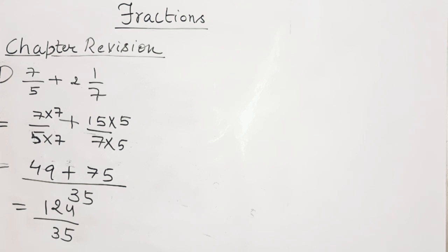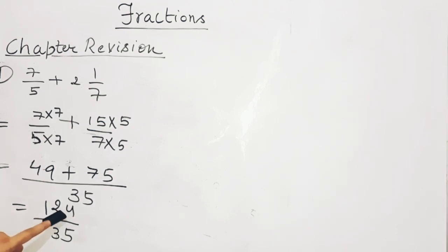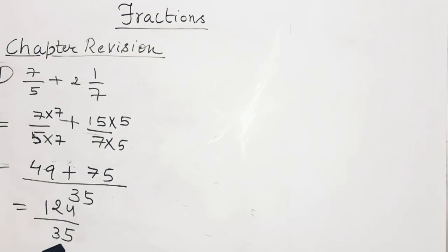49 plus 75: 9 plus 5 is 14, carry 1; 7 plus 4 plus 1 is 12, carry 1; that gives 124. So the answer is 124 upon 35. It cannot be reduced because one number is divisible by 5 and the other is even and odd, so they share no common factor.